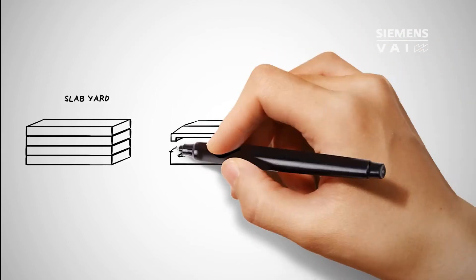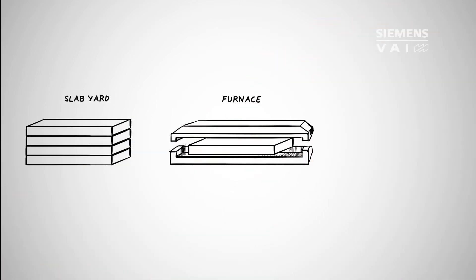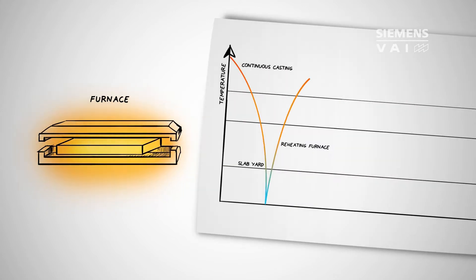In the conventional process the cast slabs are stored in a slab yard where they cool down. They are then reheated for rolling. At this point the microstructure consists of large grains. However during rolling not only is the desired thickness attained but also the required fine microstructure.